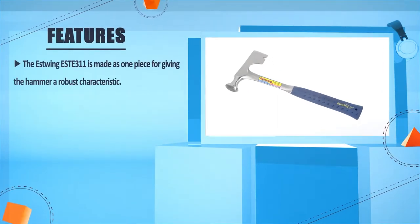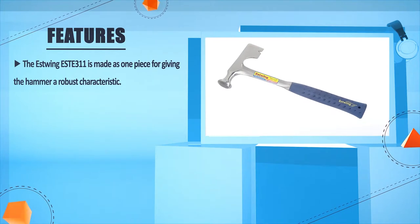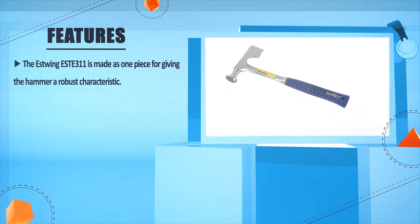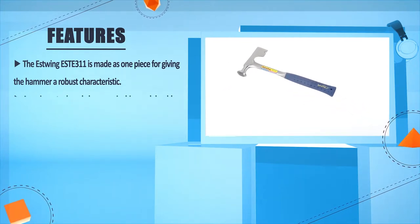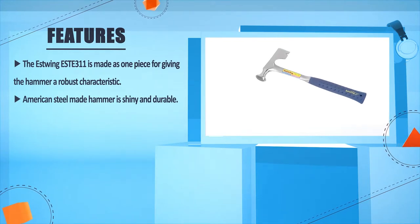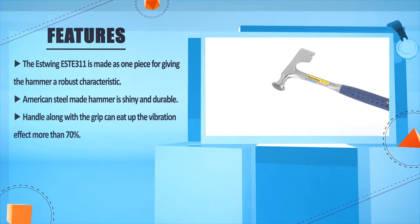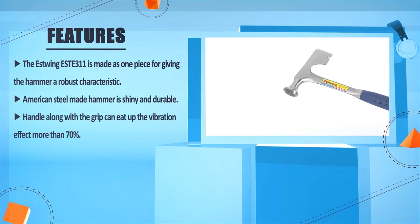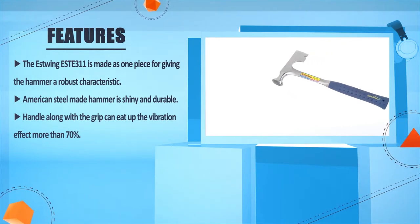The Estwing E-S-T-E-3-1-1 is made as one piece for giving the hammer a robust characteristic. American steel made hammer is shiny and durable. Handle along with the grip can absorb the vibration effect more than 70%.